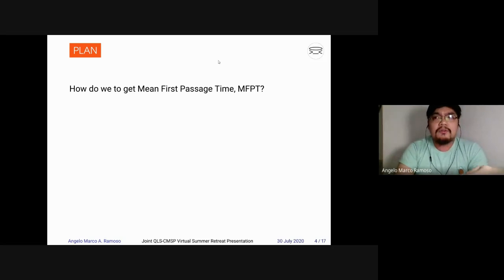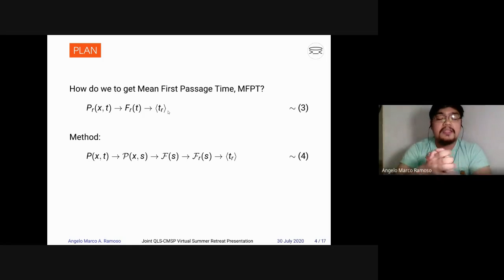So, the plan to solve the first passage characteristics is, how do we solve for the first passage, or the mean first passage time? In papers, we read that they can solve for this by first solving the probability distribution with the setting, computing the first passage time with the setting, and then getting the mean first passage. But this, for me, it's not intuitive, and I'm going to show a more friendly approach. For me, I will start with the distribution, solve for the Laplace transform of our probability distribution, then compute the first passage time without the setting, and then later on, we include the setting onto it, then solve for the main first passage time.